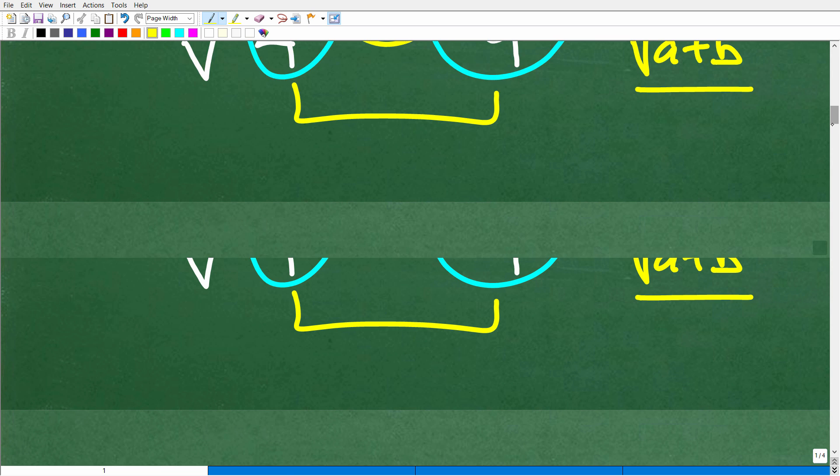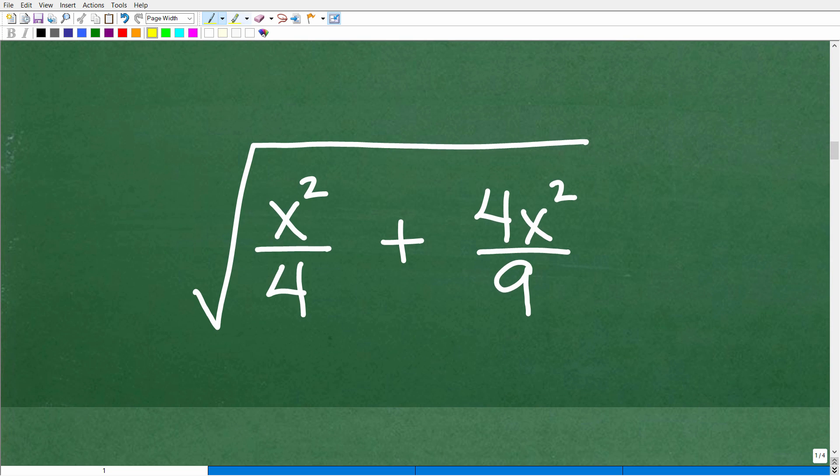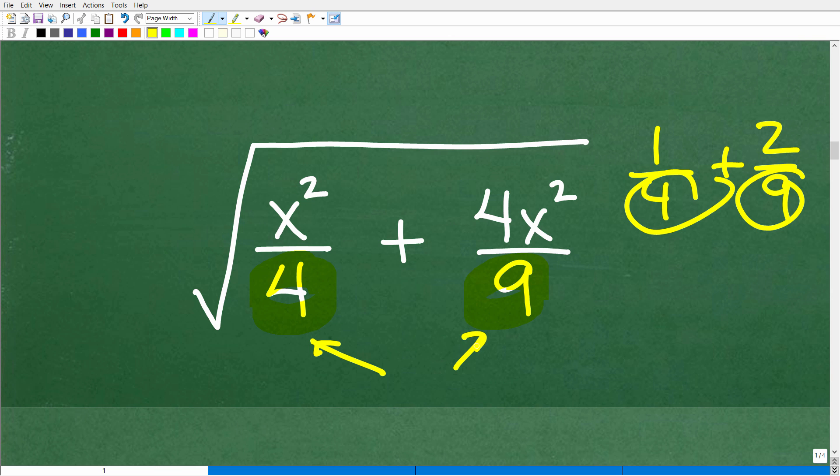So what do we need to do? We don't have too many options. We're going to have to add these fractions or rational expressions. Now this is not that difficult because take a look at our denominators, 4 and 9. If you can do this problem, 1 fourth plus 2 over 9, then you can do this problem as well.